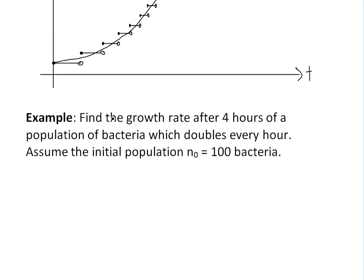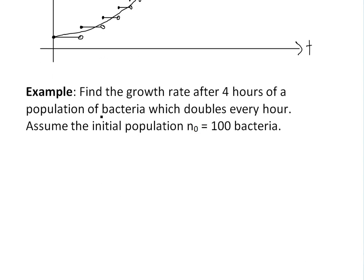Now to help better illustrate the biology concept above, we'll go over this example: Find the growth rate after four hours of a population of bacteria which doubles every hour. Assume the initial population n₀ = 100 bacteria. So first we need to find a function for n(t) = f(t).